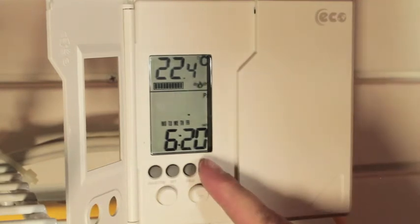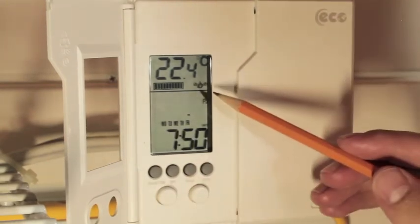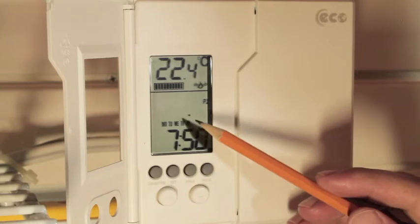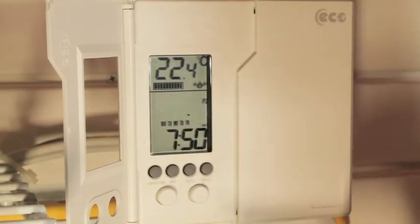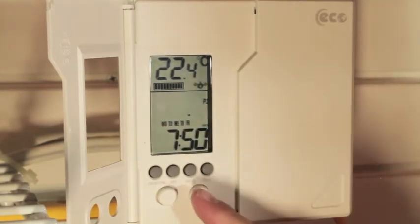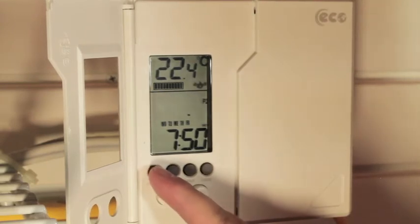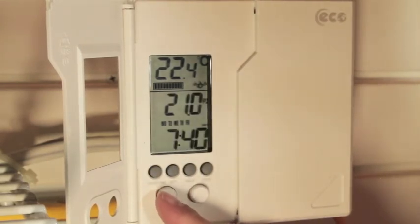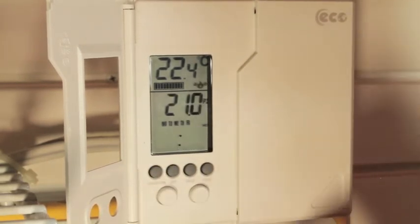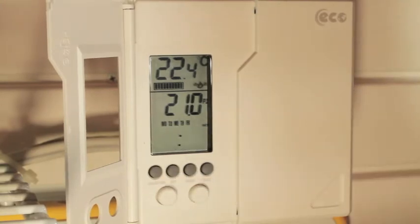To advance to Program 2, press the PROG button. P2 will now appear on screen, as well as all the days of the week. You can adjust the temperature and time the same way you did for Program 1, switching between the time and temperature by pressing the usage time button.